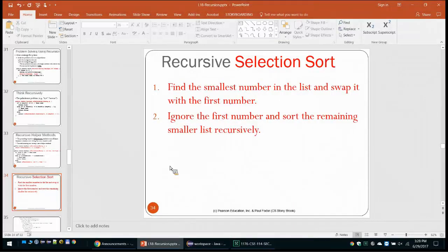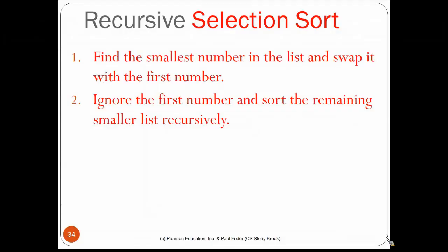In the second part of the recursion chapter, we are going to start with a few algorithms that we already talked about earlier when we talked about arrays. The first one is the selection sort algorithm. If we read the definition of the selection sort algorithm, we will see that it is actually a recursive algorithm: find the smallest element in the list, swap it with the first number, ignore the first number, and then sort the remaining elements using selection sort again. So this is a recursive problem.